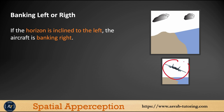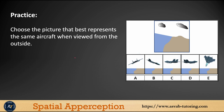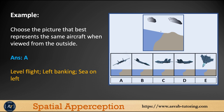Now let's practice. The picture that best represents the same aircraft from an outside point of view — look at the horizon here. You can see it is inclined to the right, which means the aircraft is making a left bank. You can see that option is the best answer, while most of the others show a different direction that doesn't make sense.